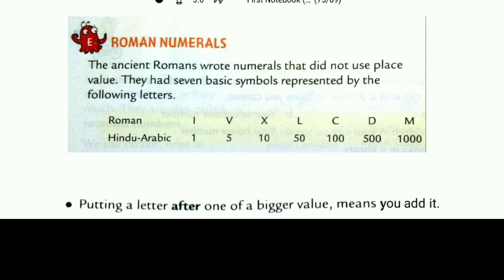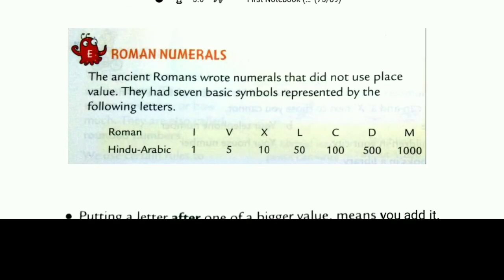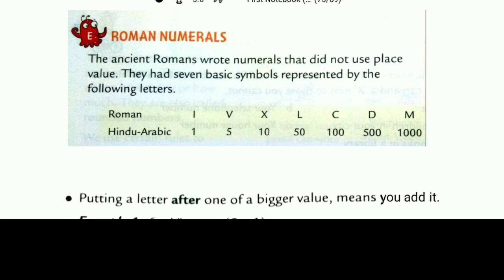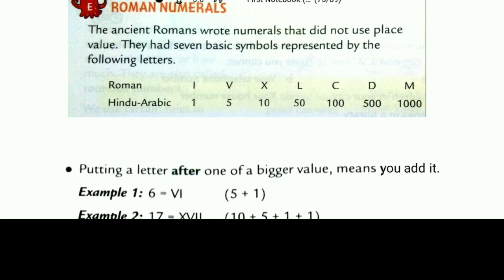Next, Roman numerals. What is Roman numerals? In this, there are 7 basic symbols represented by the following letters. Roman and Hindu: 1 is I, 5 is V, 10 is X, 50 is L, 100 is C, 500 is D, and 1000 is M. These are the 7 basic symbols. With this respect, we can solve all the questions of Roman numerals.